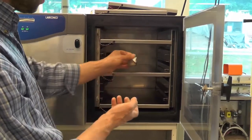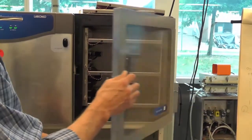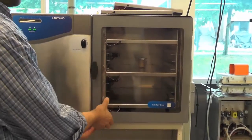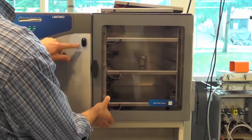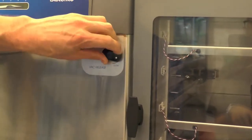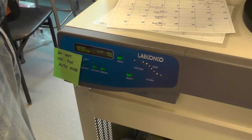When the samples are ready, place into the freeze dryer and close the door by turning the handle clockwise. Then twist the vacuum release valve into the closed position. Press the vacuum button to initiate the drying process.